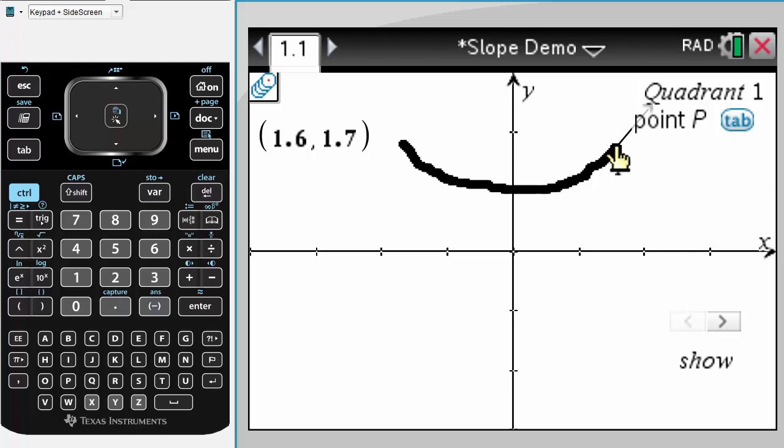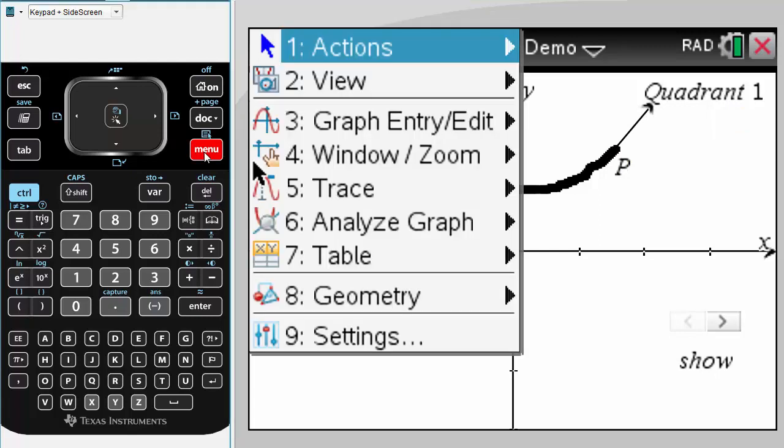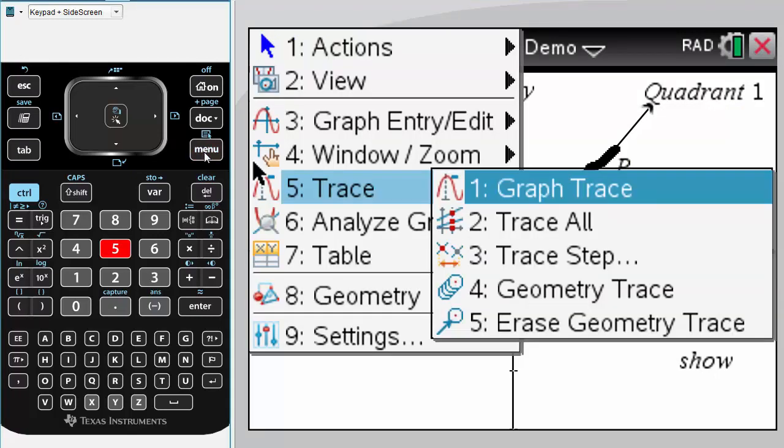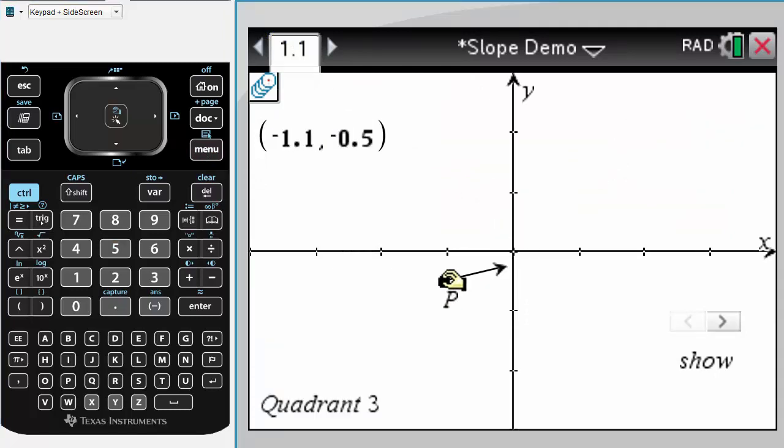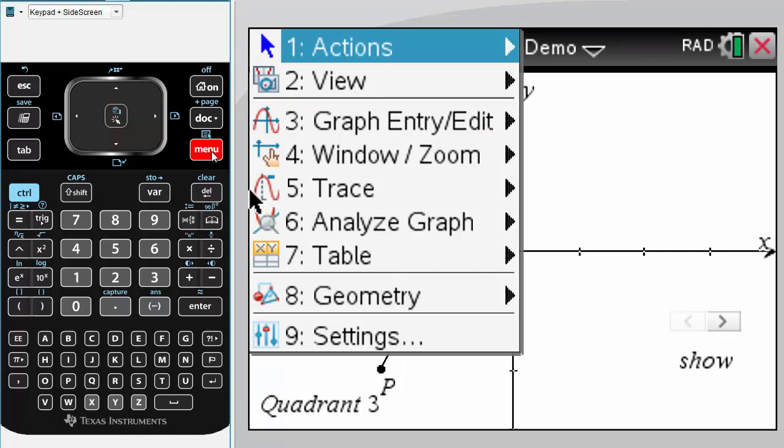Let's have a look what would happen if we put our point in quadrant 3. So we'll erase our existing trace, move down to quadrant 3, and you can see that because both x and y are negative down here, the product is positive again.